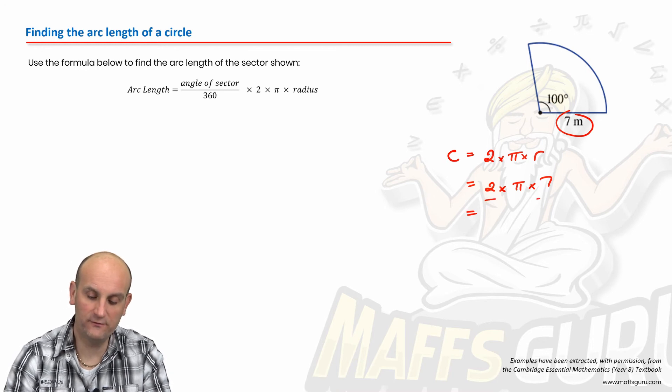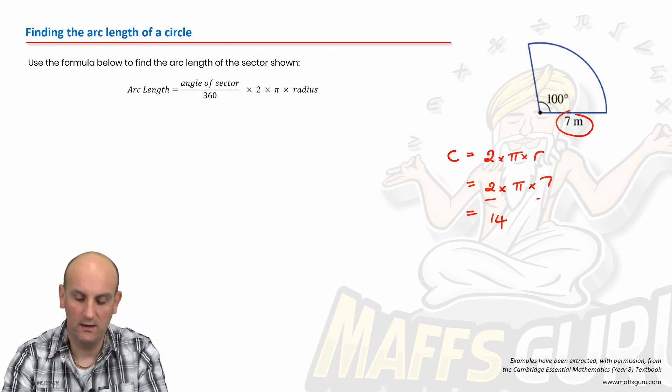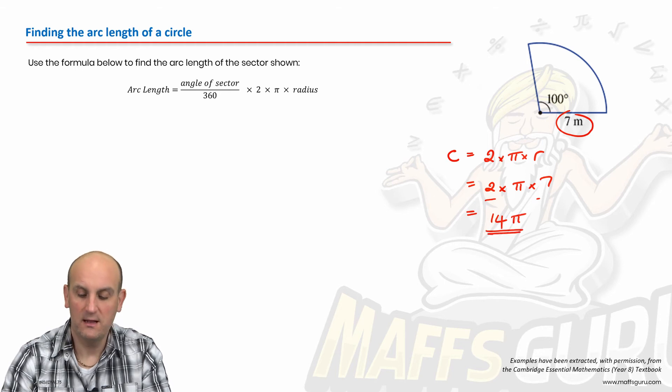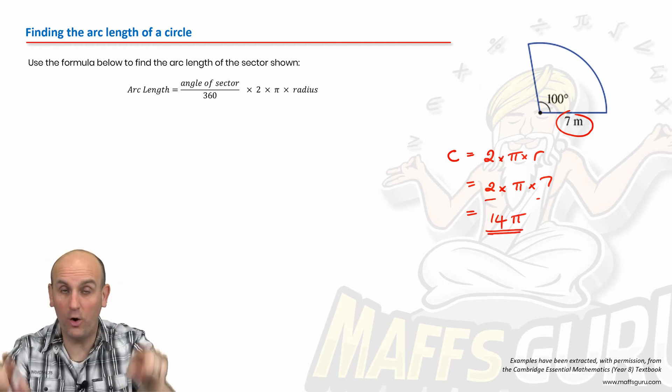And I know that 2 times 7 is 14. I can do that because we're all kissing together. And 14 pi, leaving an exact value. That's my whole circle.